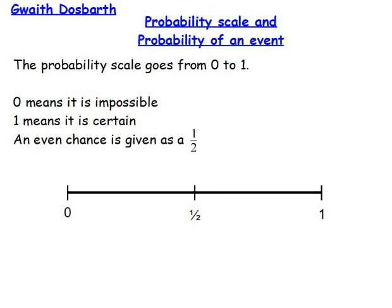The probability scale goes from 0 to 1, where 0 means that something's impossible, and 1 means something is certain. An even chance is given as a half, so 1 over 2, and it's halfway between 0 and 1, which is halfway on our scale.